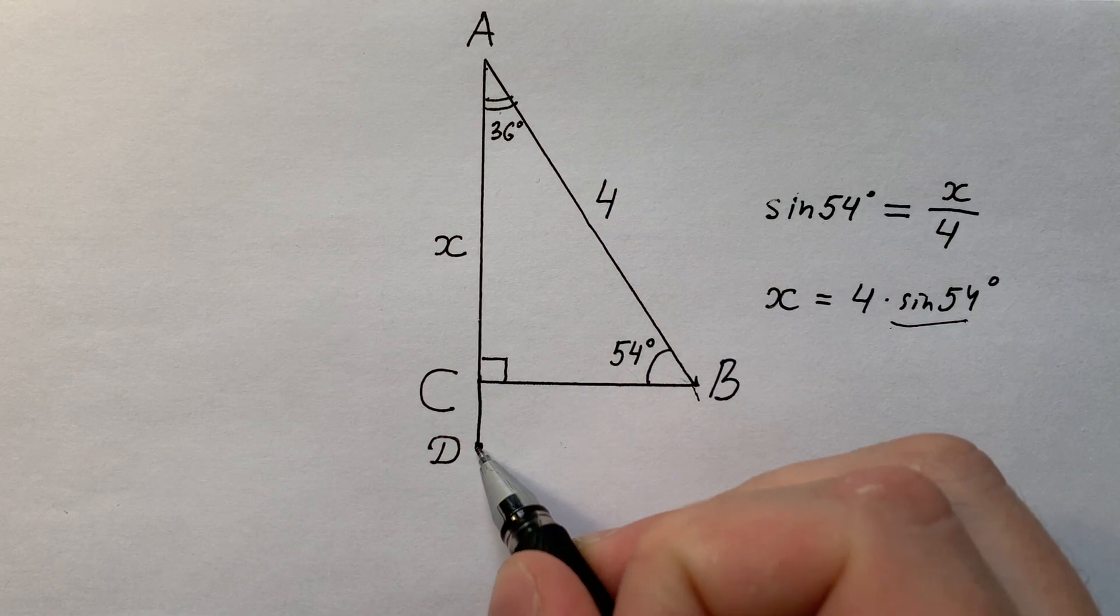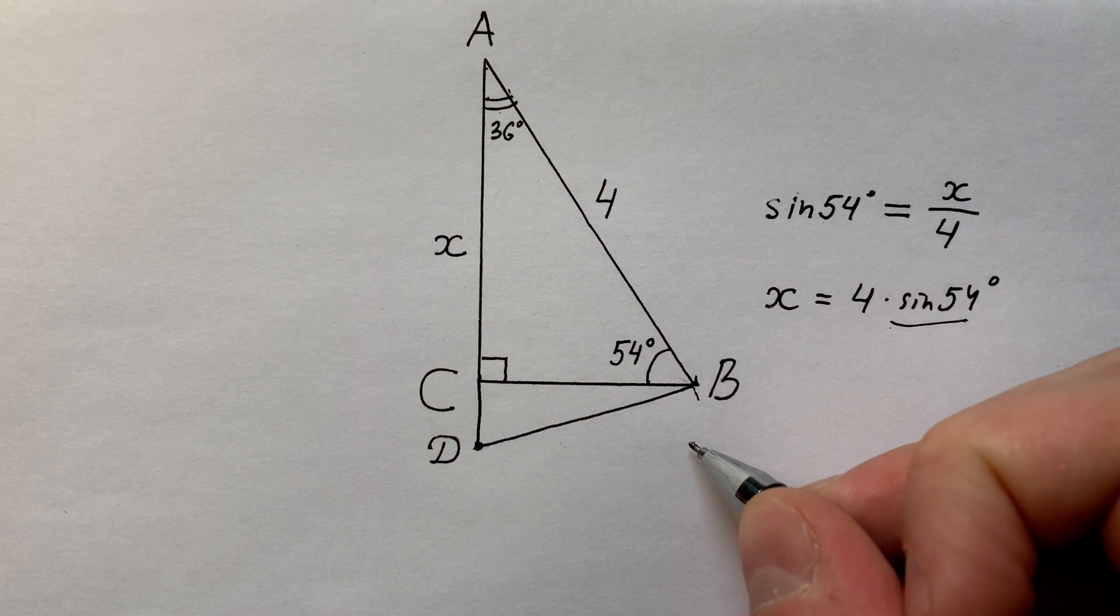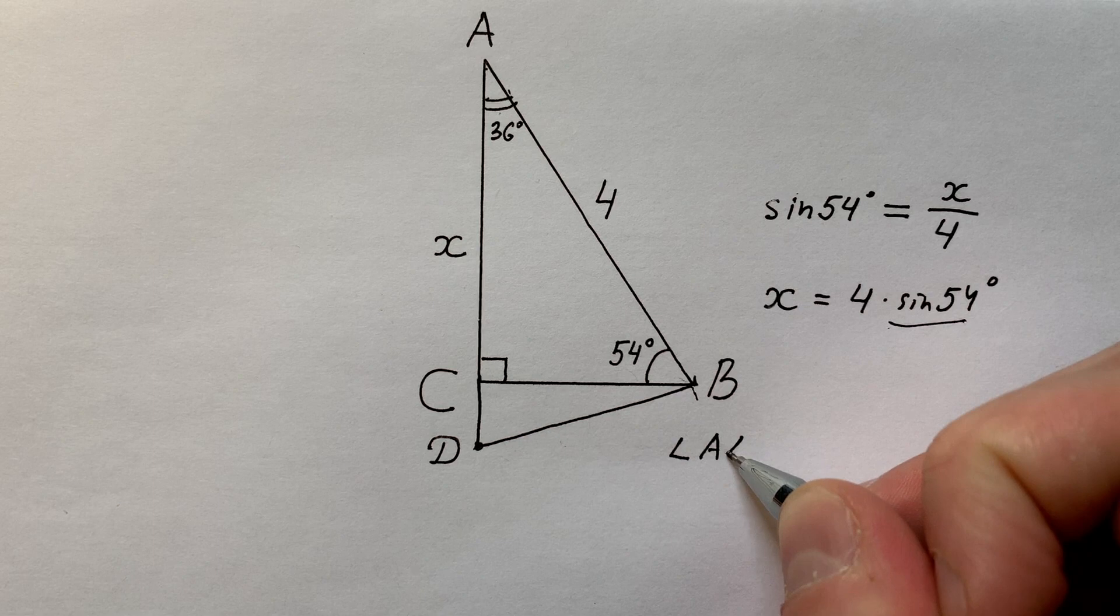So we get equilateral triangle ABD. And we can write that angle ADB